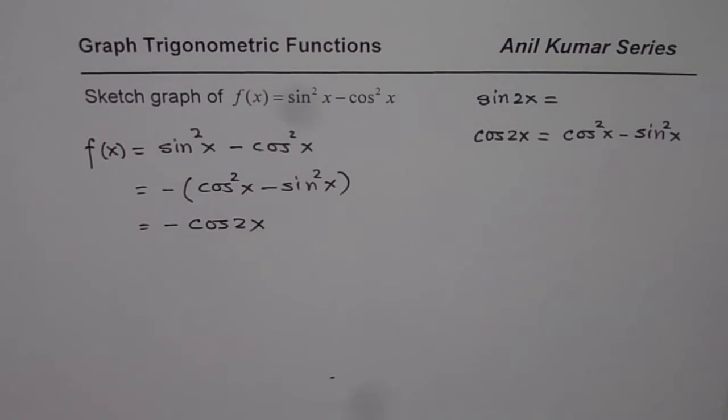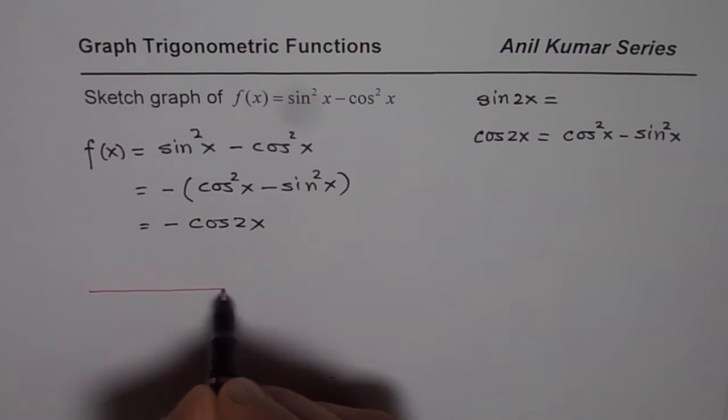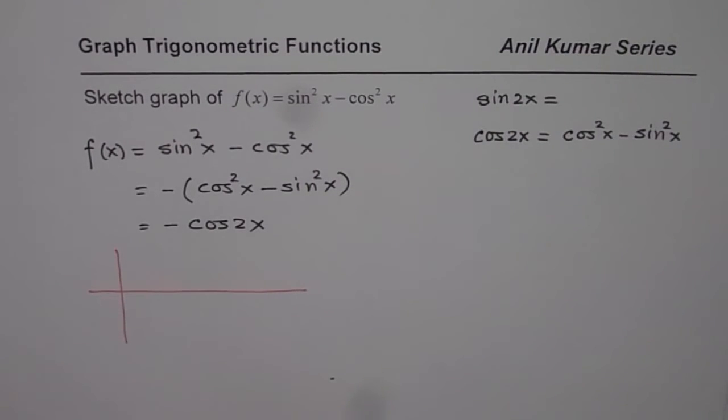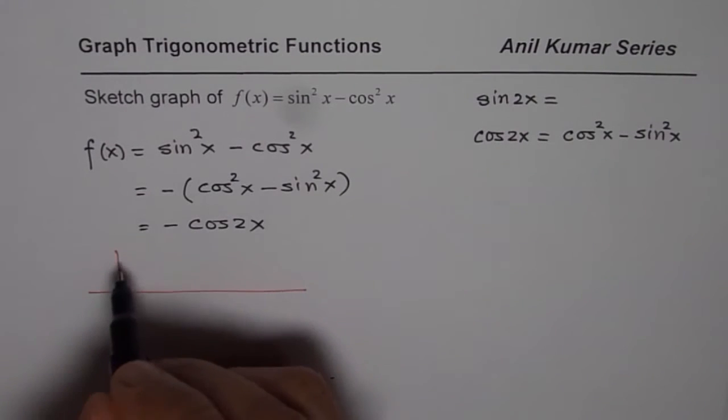It really means that it is a cosine function which will have two waves within a period of 2π, right? And amplitude is 1, but it should start with the minimum since there is a reflection.